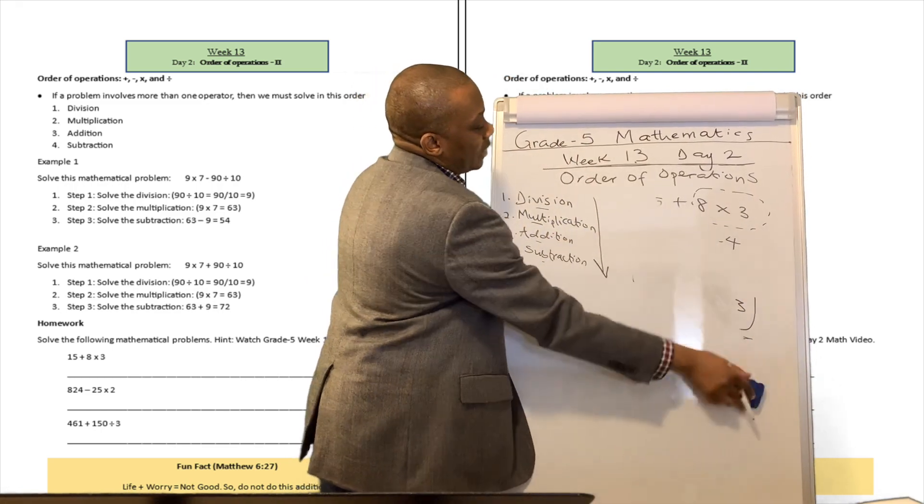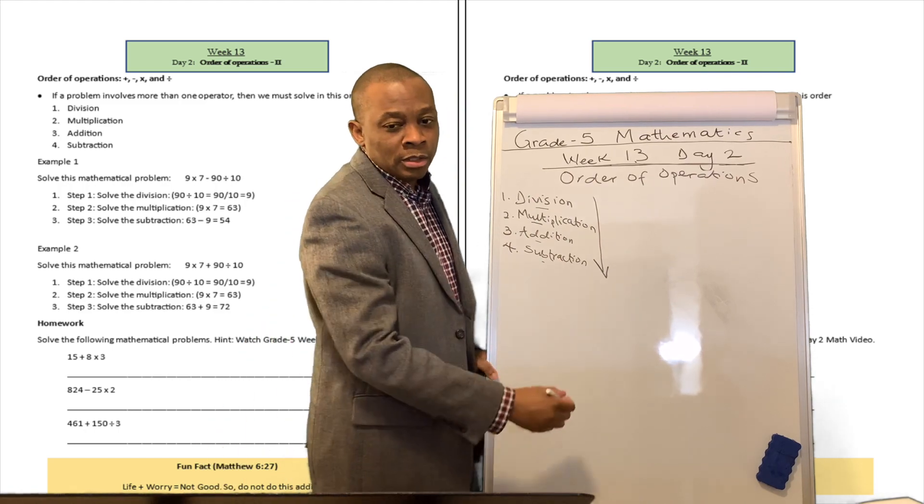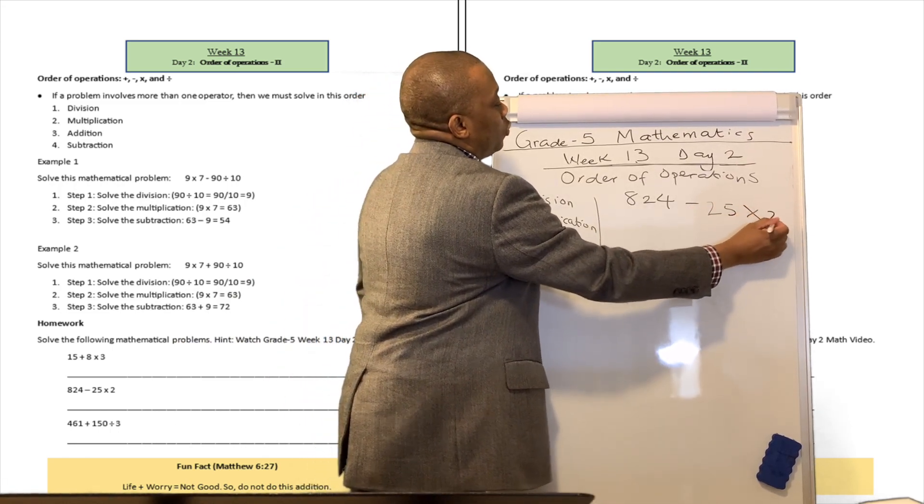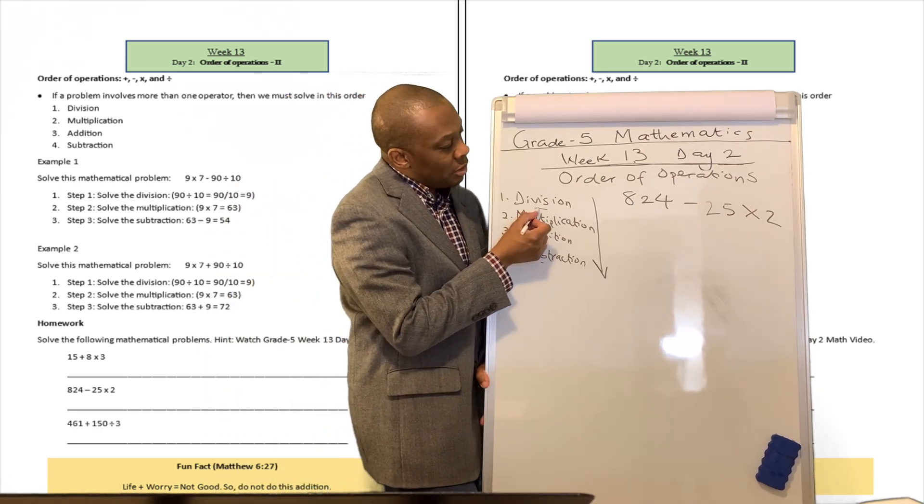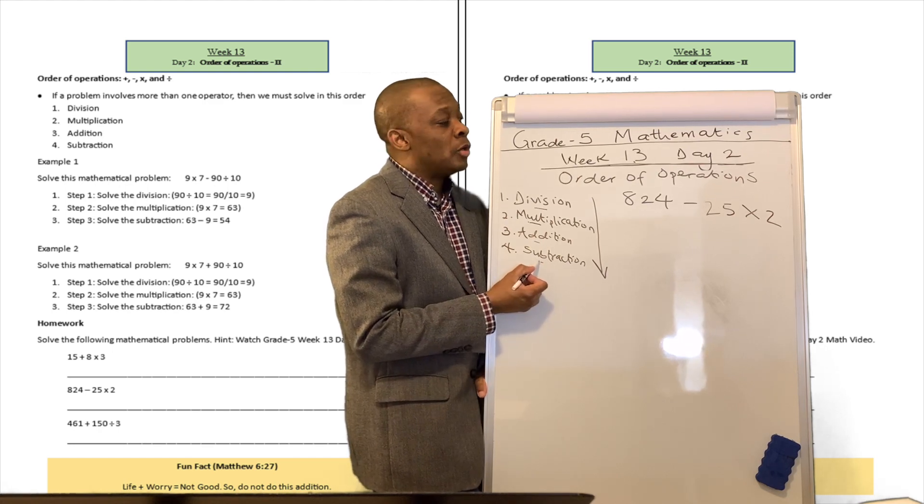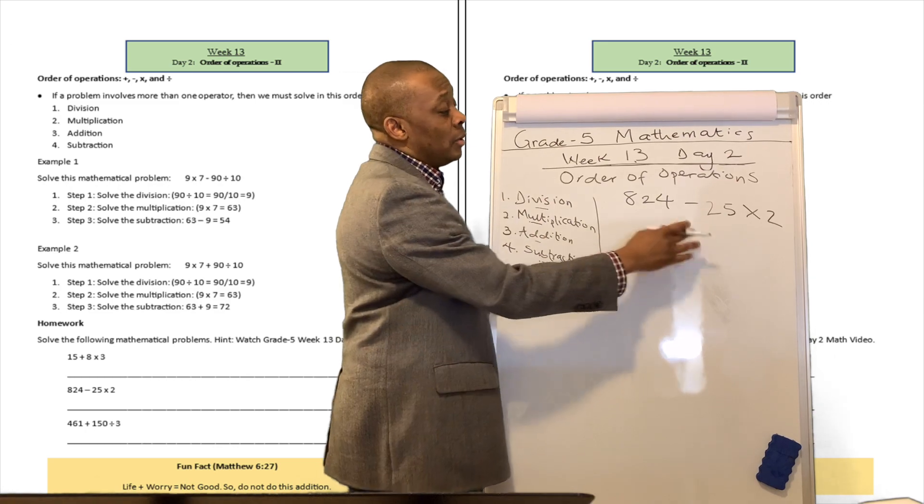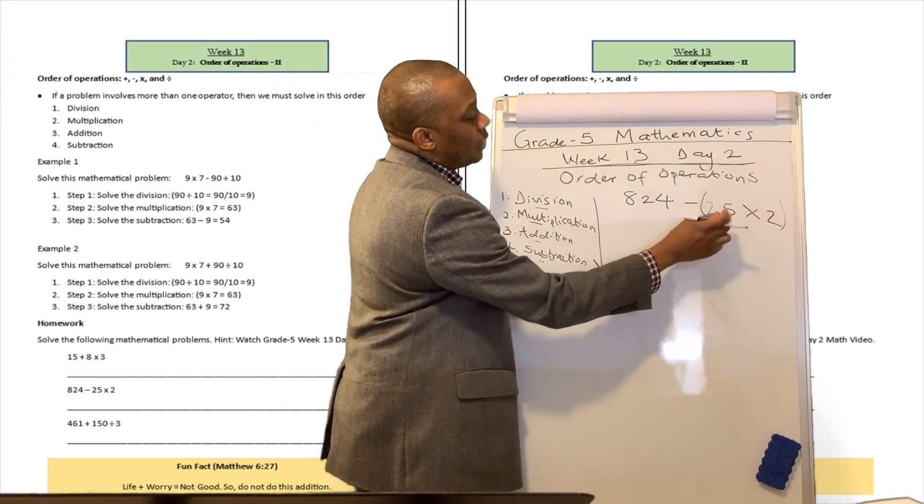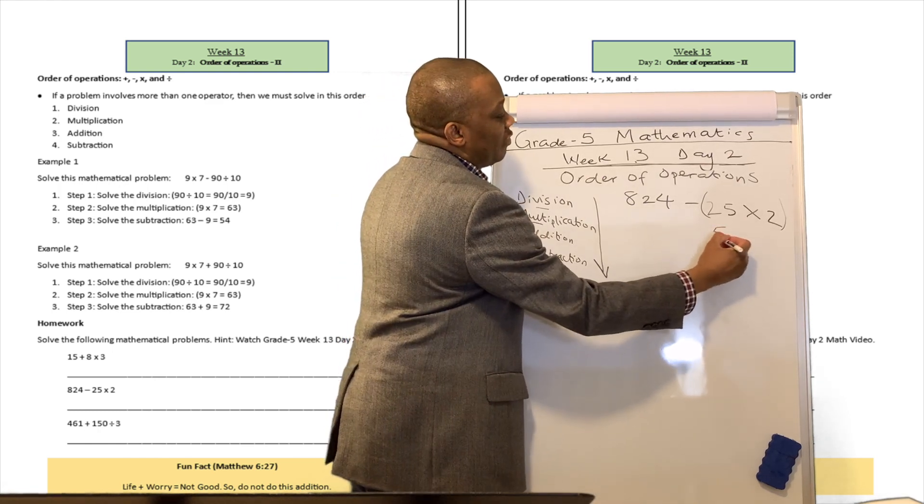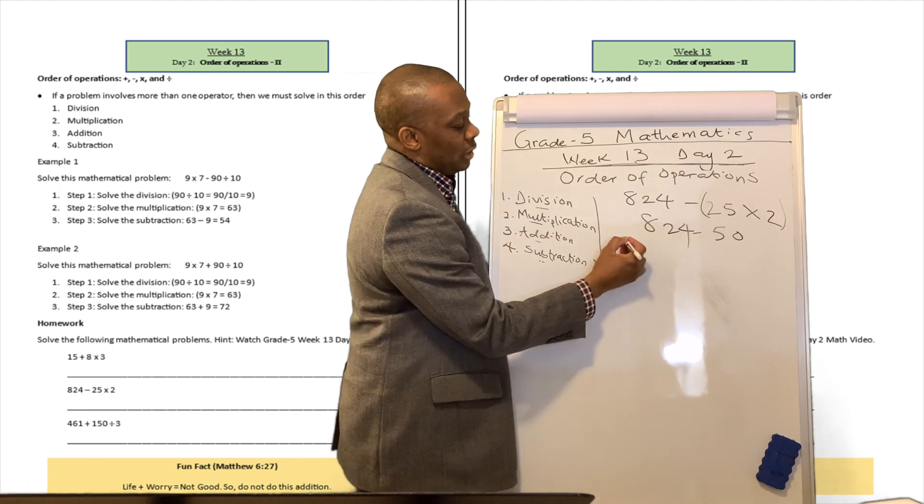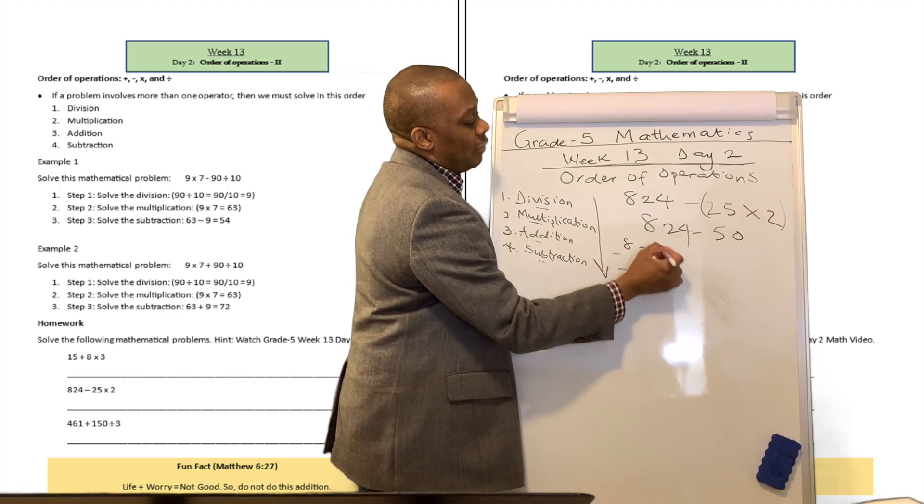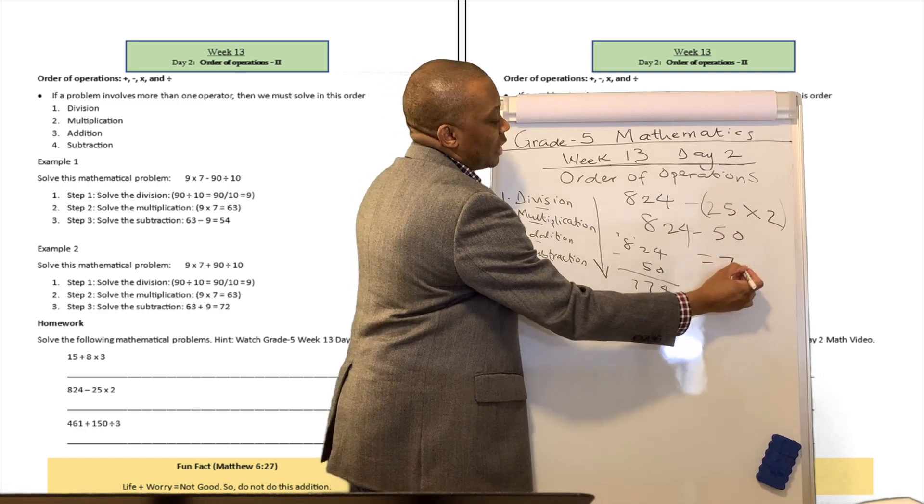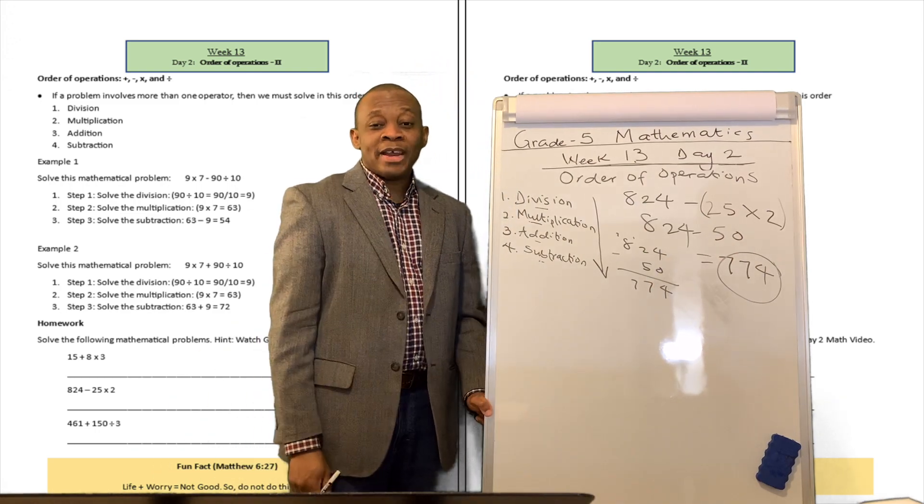All right. This one says 824 minus 25 times 2. Well, there is no division here, but there is a multiplication and there is a subtraction. So what are we going to do first? We're going to do the multiplication aspect of this problem. We're going to solve that one first. So if we want to help ourselves, we can put brackets over here just like that. So we're going to say what is 25 multiplied by 2? That's going to be 50. So 50 and then 824. Let's quickly do it in terms of place values. 4 minus 0 is 4, 12 minus 5 is 7, and there's going to be a 7 here. So the answer is going to be 774, just like that.